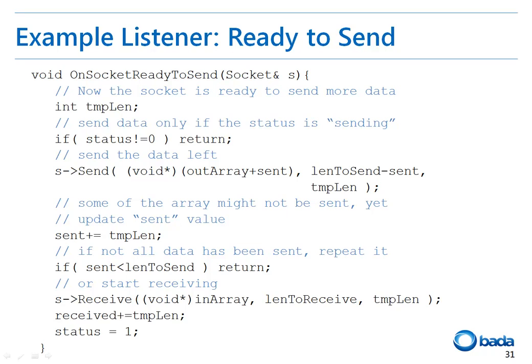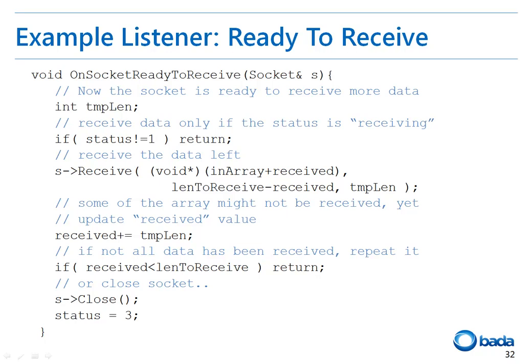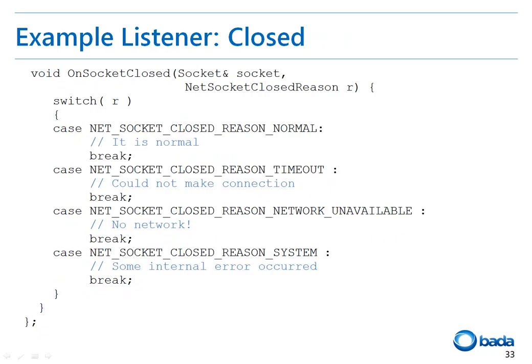The receive function calls the receive function of the socket to start receiving data and changes the state to the receiving state, which is 1. The OnSocketReadyToReceive function notifies the application that the receive buffer is filled with data and the data is ready. If the state is in the not-receiving state, the function returns. This function contains the procedures to receive the data and to close the socket and change the status to 3 when all the data has been received. The OnSocketClosed function is called when the connection is closed. The reason for the connection being closed is passed through a parameter, and depending on this value, you can perform the relevant operation.